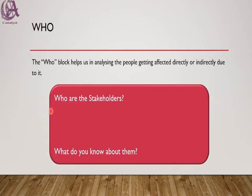In the Who block, it will help us to analyze the people getting affected directly or indirectly due to this particular problem. In the Who block, we are finding the stakeholders — the people who are involved in the problem and how they will be benefited by the solution. We have to define our stakeholders and what we know about them, and answer these questions to complete the Who block.